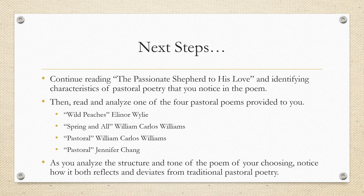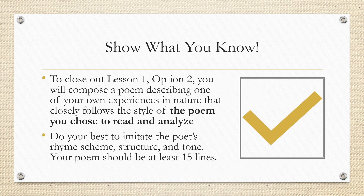Next, you will continue reading The Passionate Shepherd to His Love and identifying characteristics of pastoral poetry you notice in the poem. Then you will read and analyze one of four pastoral poems provided: Wild Peaches by Eleanor Wiley, Spring and All by William Carlos Williams, Pastoral by William Carlos Williams, or Pastoral by Jennifer Chang. As you analyze the structure and tone of the poem you choose, notice how it both reflects and deviates from traditional pastoral poetry. To close out lesson one, option two, you will compose a poem describing one of your own experiences in nature that closely follows the style of the poem you chose to read and analyze. Do your best to imitate the poet's rhyme scheme, structure, and tone. Your poem should be at least 15 lines in length.